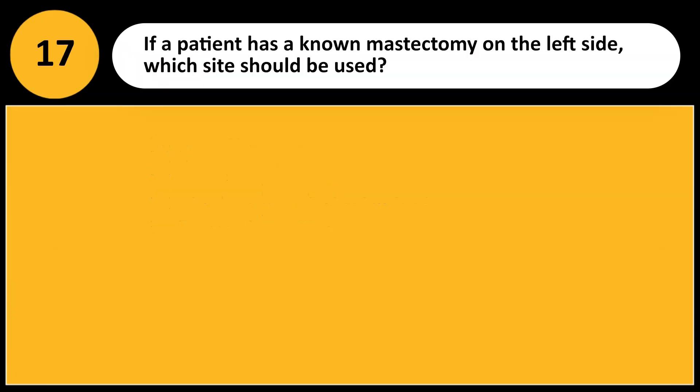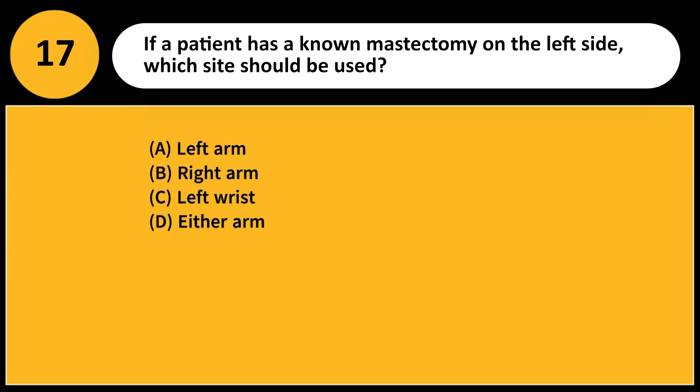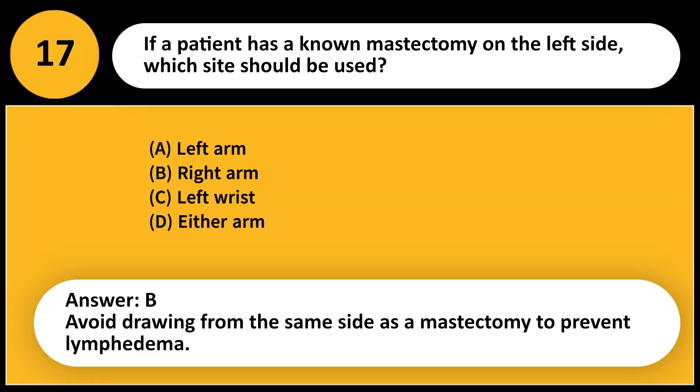If a patient has a known mastectomy on the left side, which site should be used? A. Left arm. B. Right arm. C. Left wrist. D. Either arm. Answer: B. Avoid drawing from the same side as a mastectomy to prevent lymphedema.